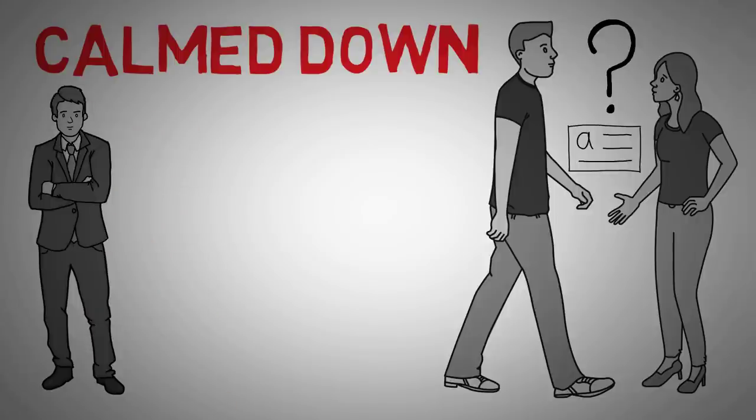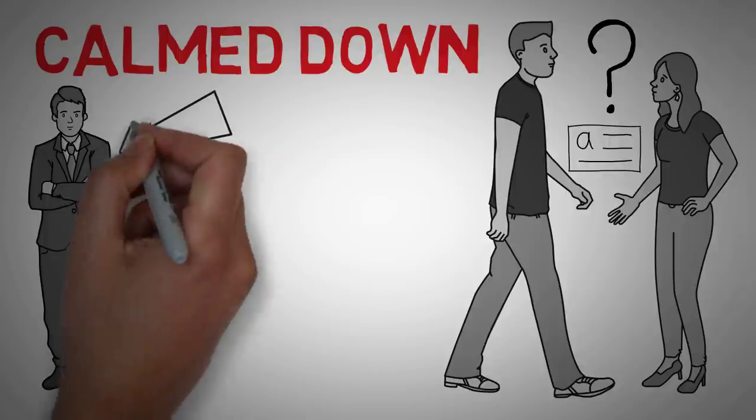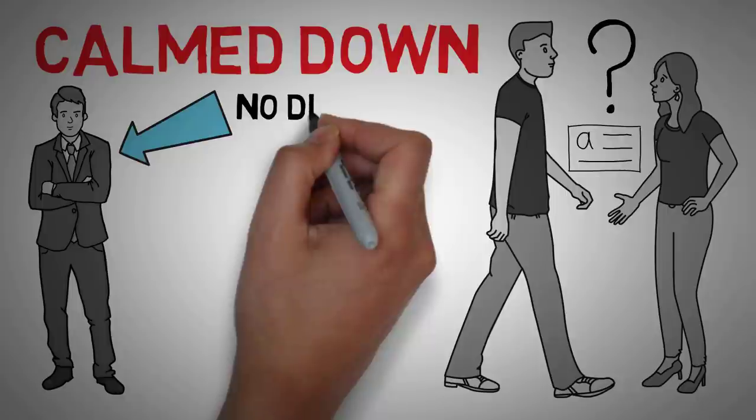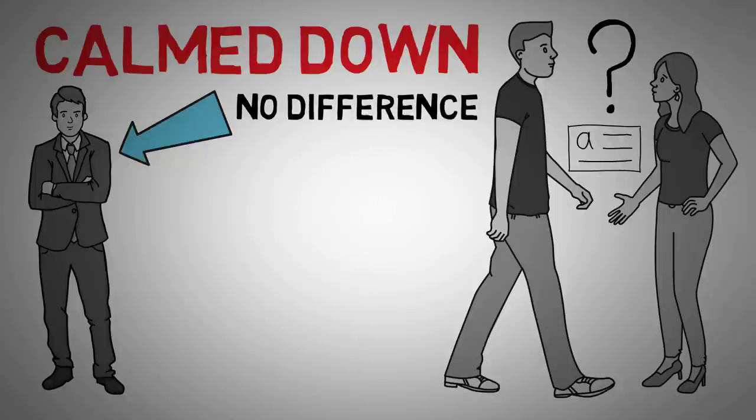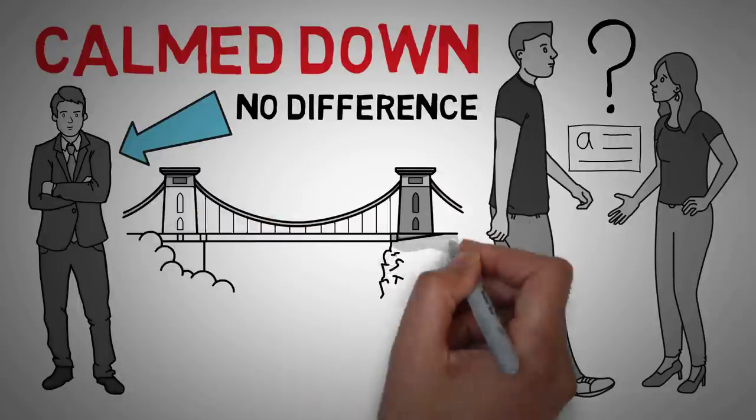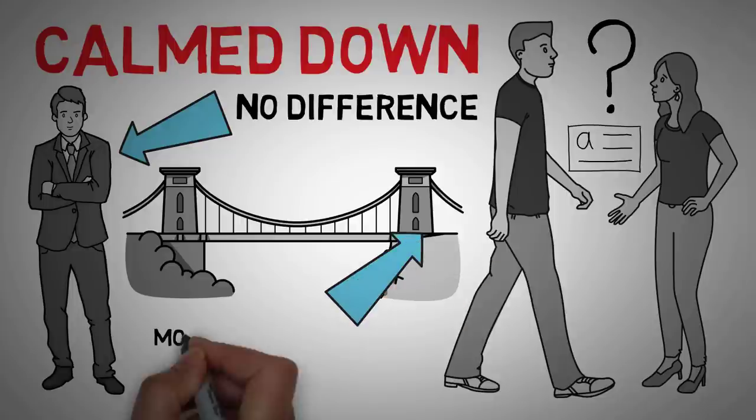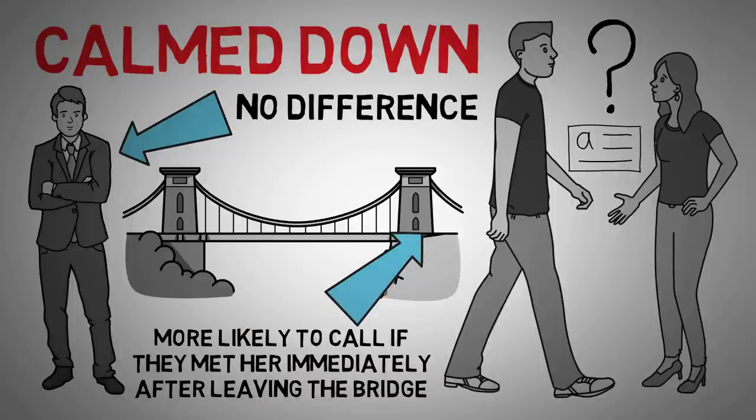The same experiment was done with a male at the end of a bridge. And there was no difference in whether the, presumably straight, participants called the male after the experiment was over. But there was a difference when the researchers recruited a woman for the experiment. The men who met the woman immediately after leaving the suspension bridge were much more likely to call the woman than the man. This proved the researchers' hypothesis.